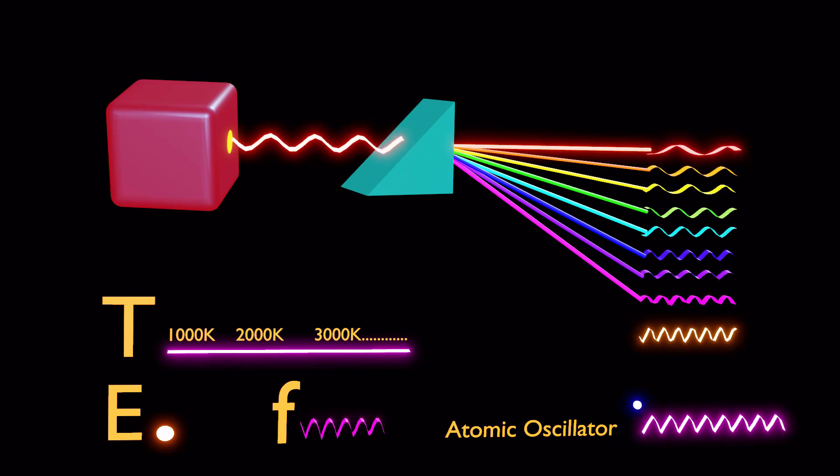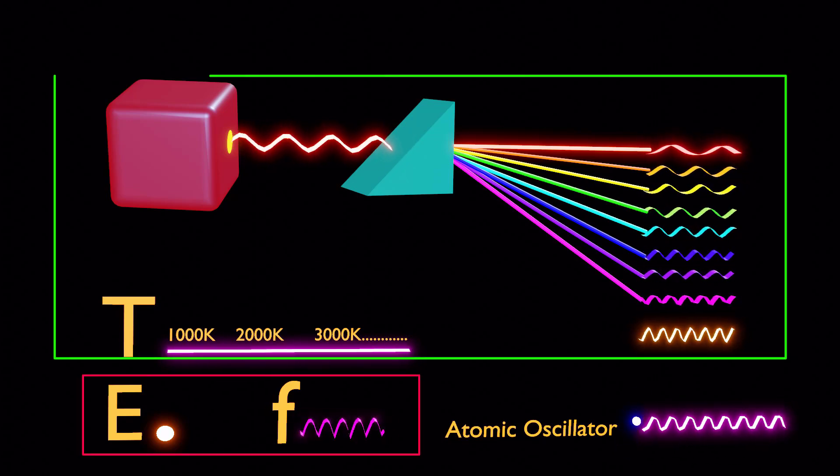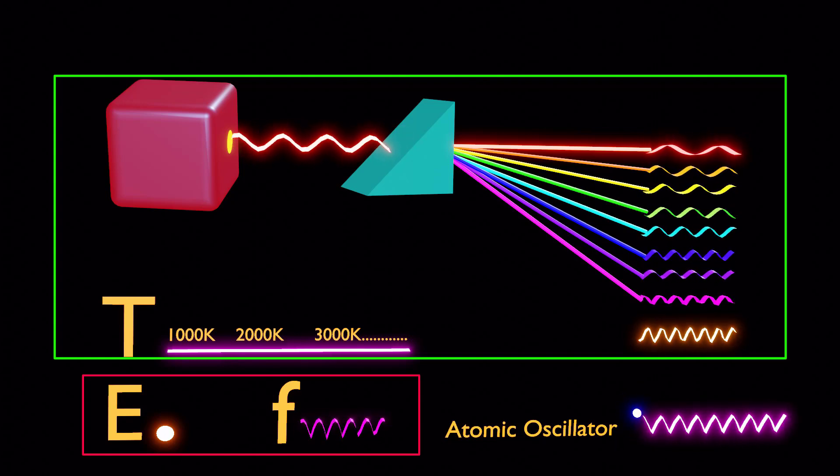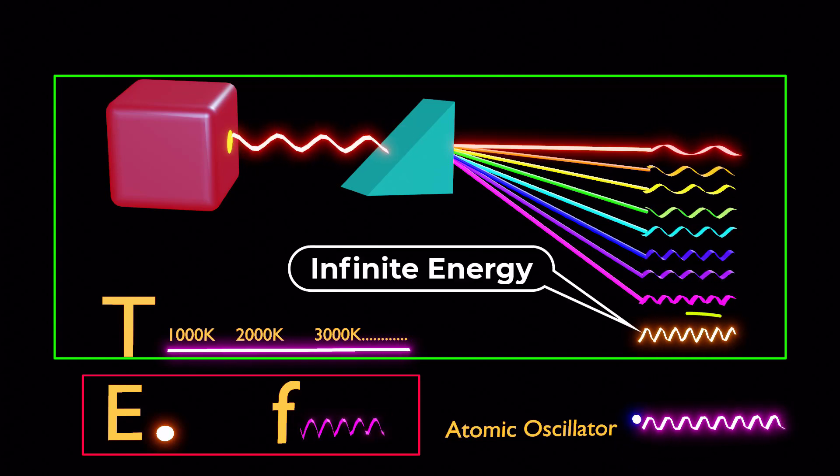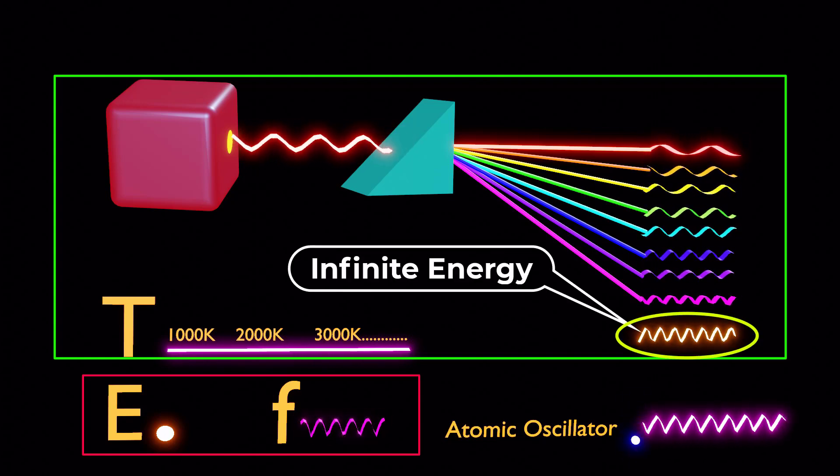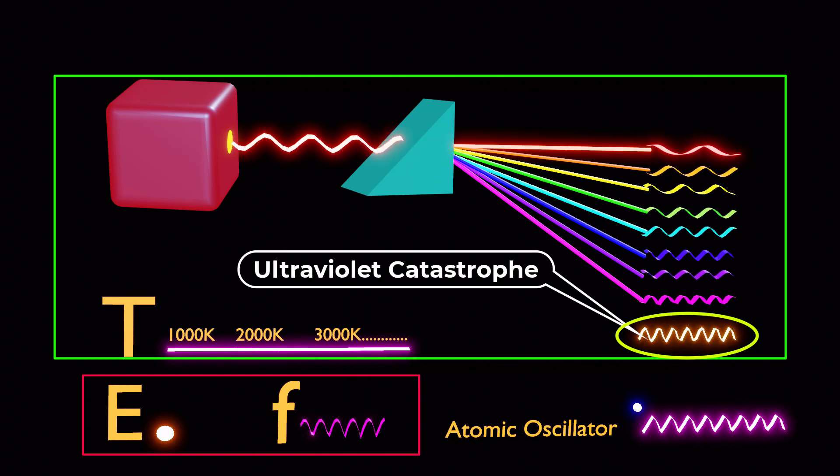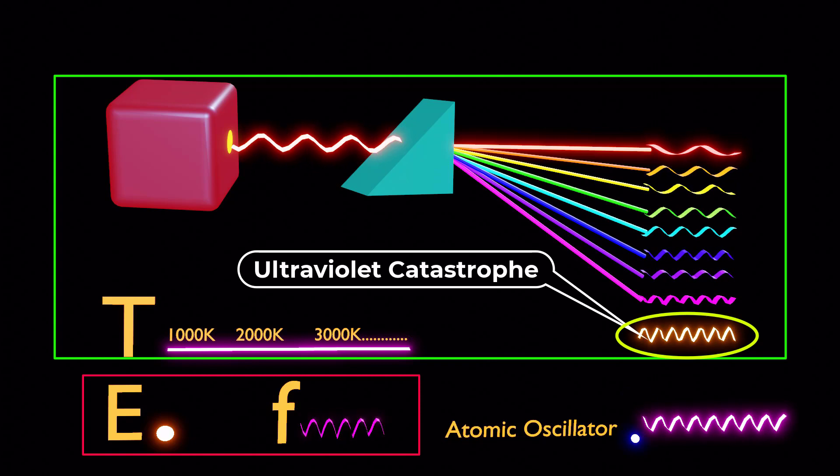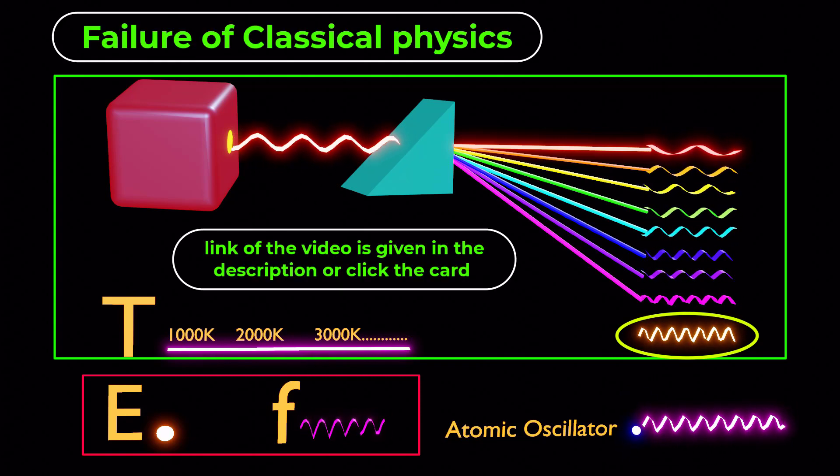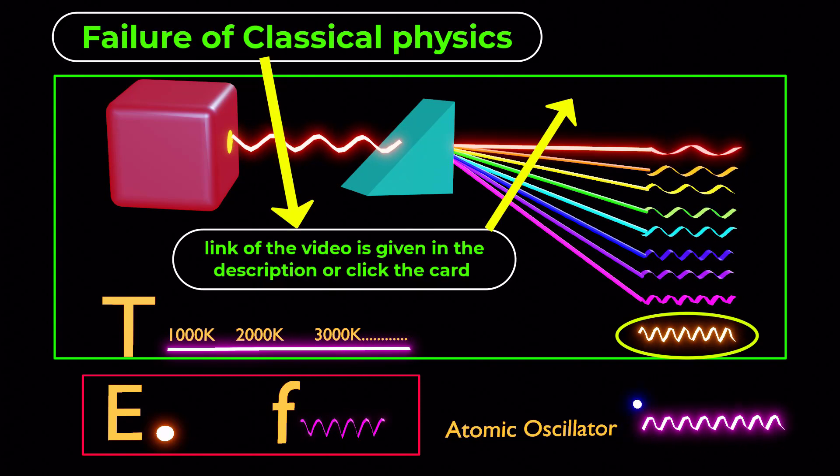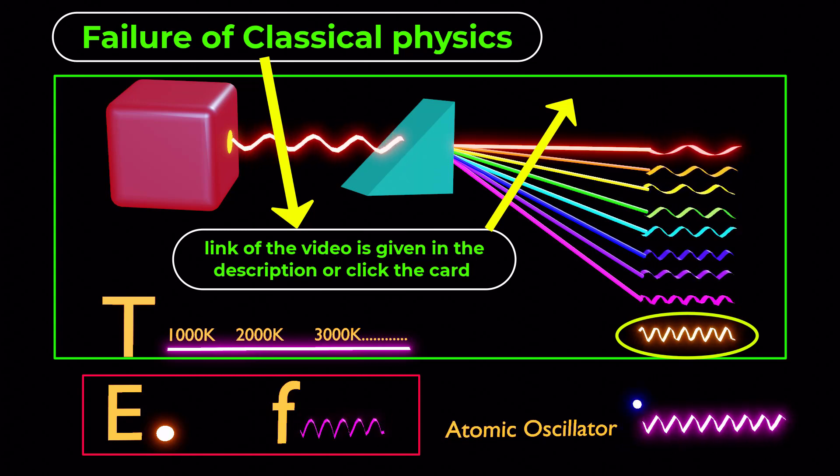However, these classical predictions clashed with experimental observations and predicted an infinite energy output at shorter wavelengths, leading to a major problem known as ultraviolet catastrophe. This failure of classical physics to fully explain black body radiation challenged the foundations of the field.